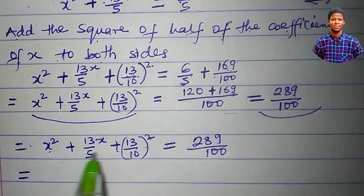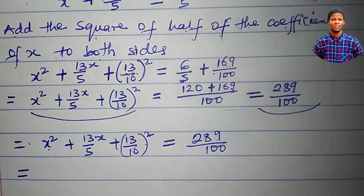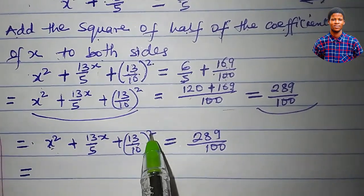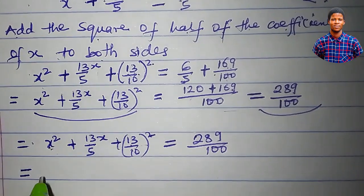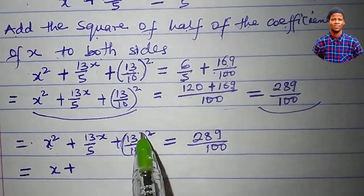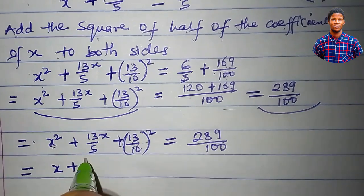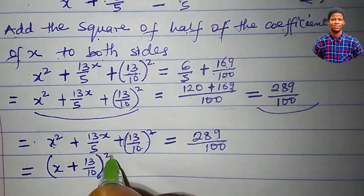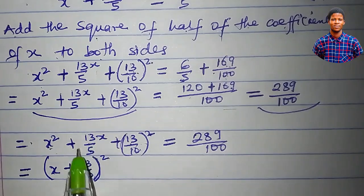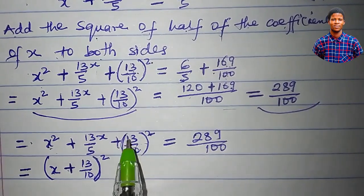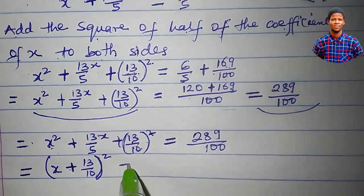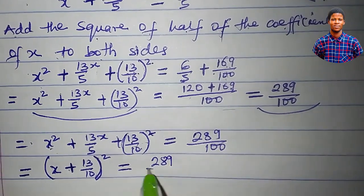What I will do now is to factorize this left-hand side. This is x squared plus 13x over 5 plus 13 over 10 all squared. What I will do is pick the x, then the sign of this middle term, which is plus, then inside the square I have 13 over 10, and square everything. So we write: open bracket, x, plus, 13 over 10, close bracket, all squared, which is equal to 289 all over 100.